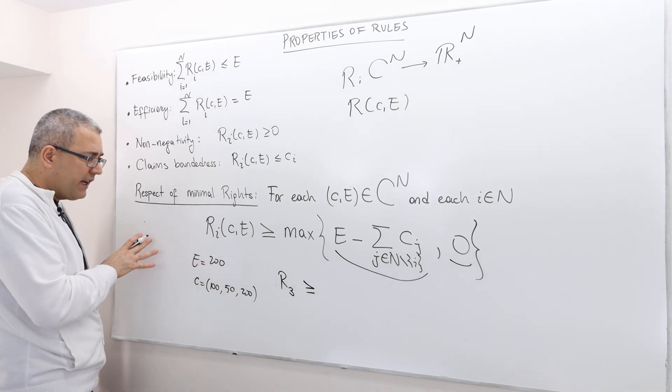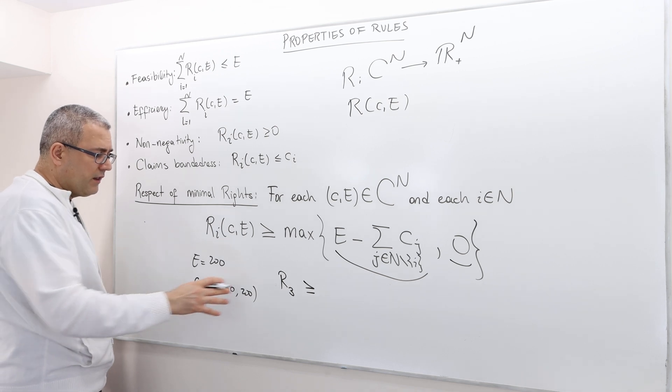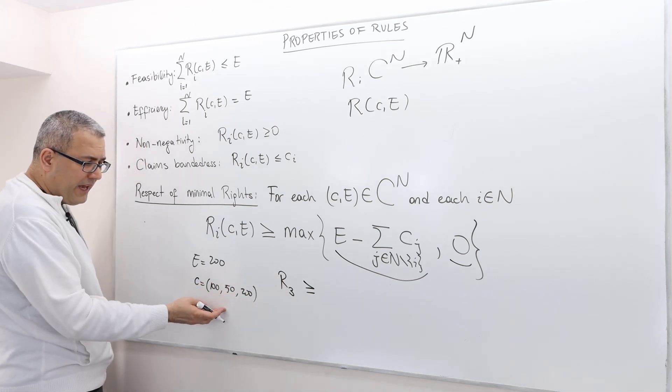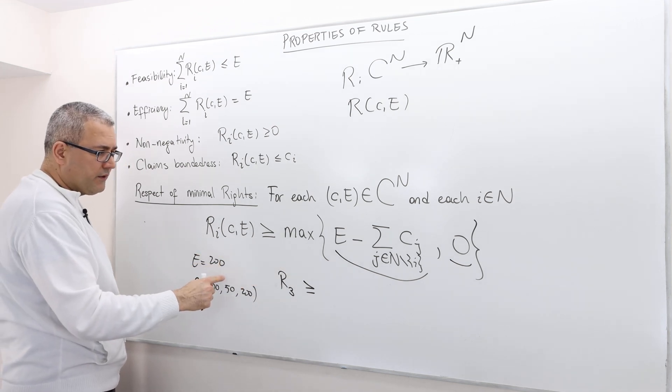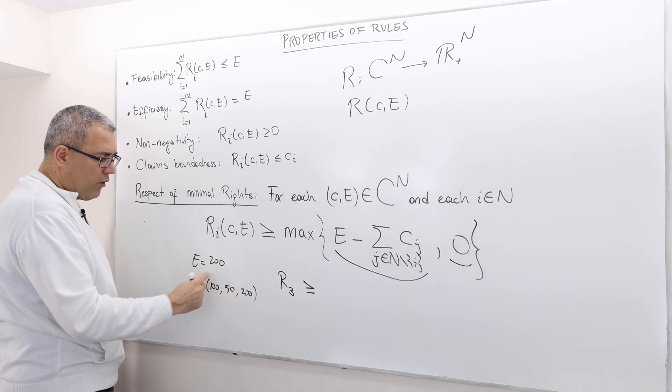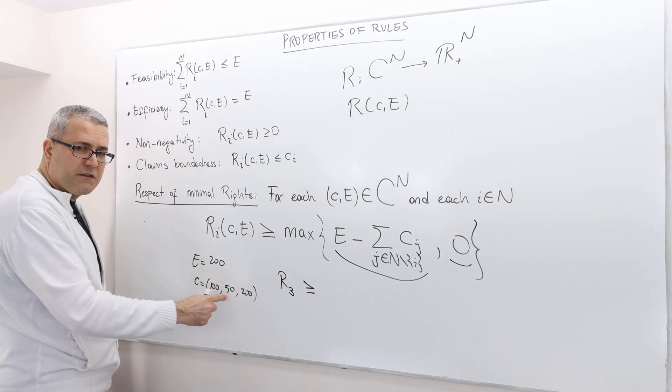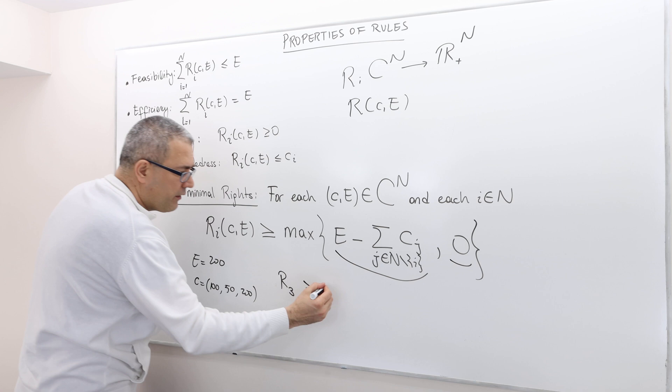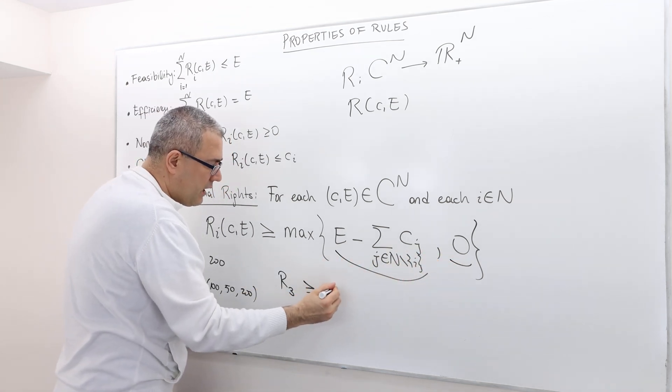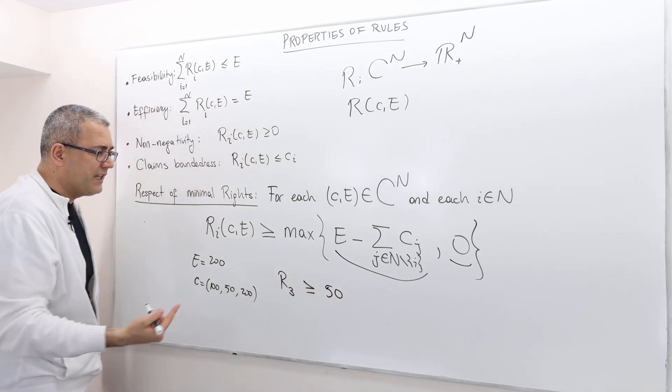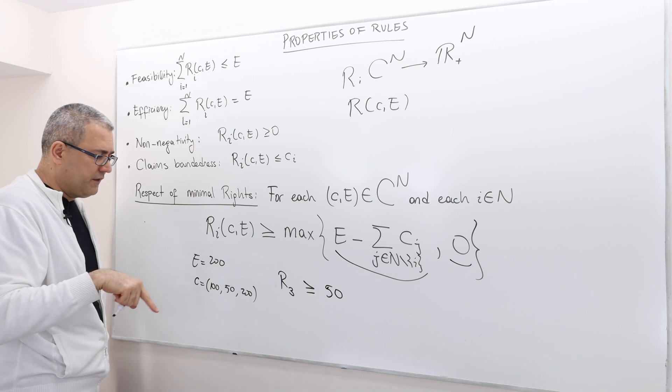But it says, if it satisfies respect of minimal rights property, well, then the third player should be getting higher than or equal to, well, what is E, $200 minus the sum of the other two players' claim, which is $100 plus $50, $150. So therefore it's $50, zero. The max of this is $50. So therefore, the third player's award must be at least $50.